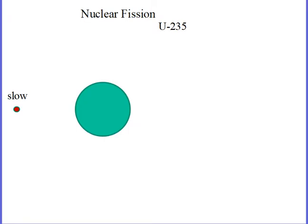Nuclear fission. U-235 is the isotope we looked at in the previous graph — it is very important. The primary isotope of uranium — 99-plus percent of the uranium you dig out of the ground — is U-238. And U-238 doesn't fission. But U-235 does. If a slow neutron goes into it — if it's going fast, it does not seem to get captured by the nucleus. But if it's going slow, it gets captured by the nucleus, and when it does, the nucleus becomes unstable.